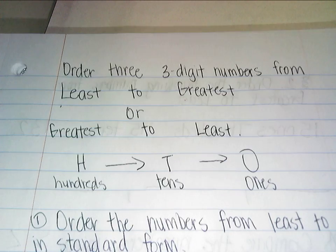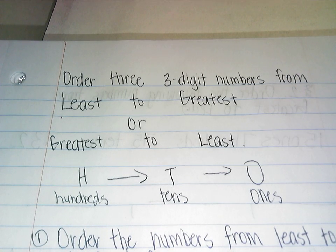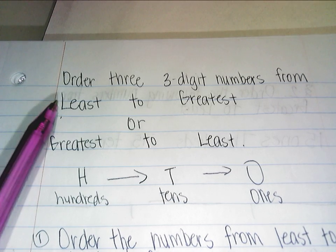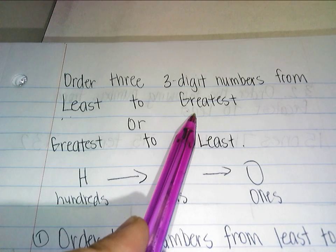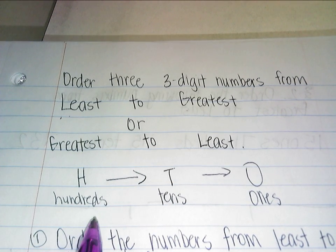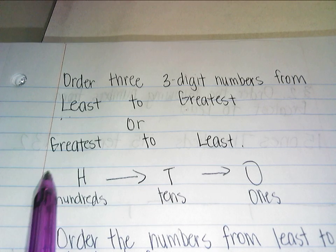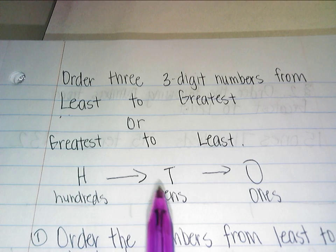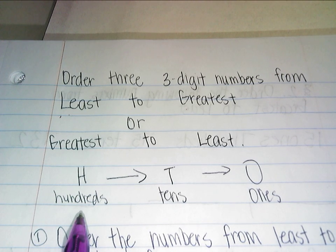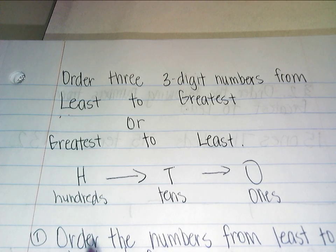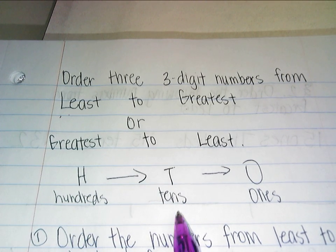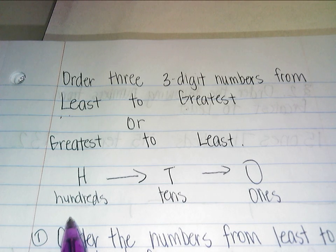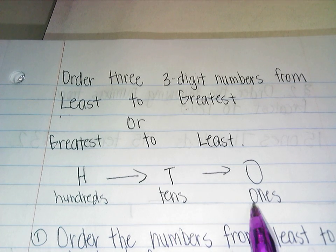So when you are ordering them, let's say you have three numbers. In order to figure out which one's the lowest number or which one is the greatest number, you want to look at the digit in the hundreds place first. Then you go to the tens place if the digit in the hundreds place is the same. If the digits in the tens are the same, you go to the ones. So you go hundreds, then tens, then ones.